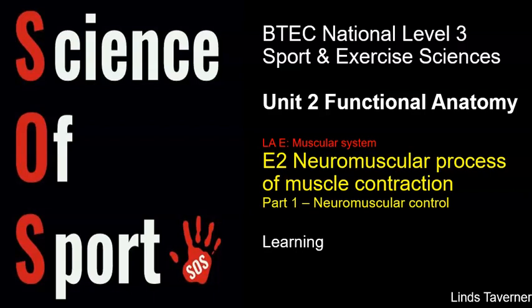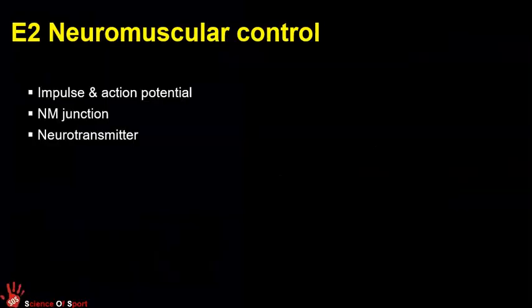The next video looks at the molecular detail of how muscle fibers contract. The specification covers a few key points you need to understand: what an impulse or action potential is, what a neuromuscular junction is, and the neurotransmitter relevant to that junction. We will cover all three of those in this video.